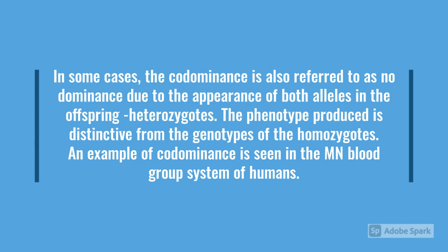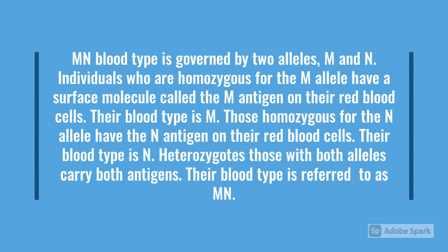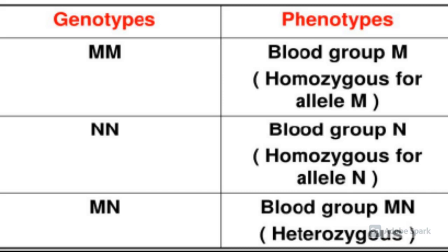An example of codominance is seen in the MN blood group system of humans. MN blood type is determined by two codominant alleles, M and N. Individuals who are homozygous for the M allele have a surface molecule called the M antigen on their red blood cells. Similarly, those homozygous for the N allele have the N antigen on their red blood cells. Heterozygotes, those with both alleles, carry both antigens. Genotype MM gives the M blood group, genotype NN gives the N blood group, and heterozygous genotype MN gives the MN blood group.